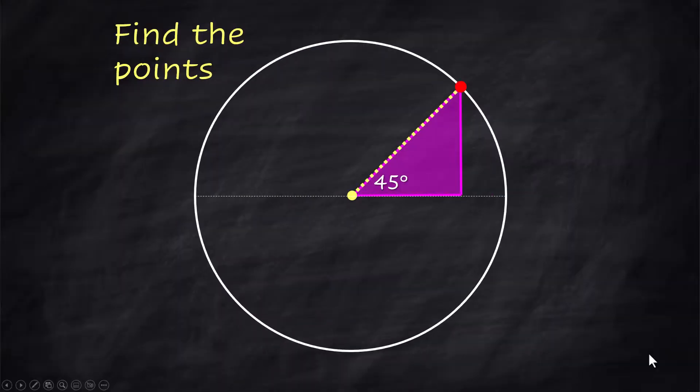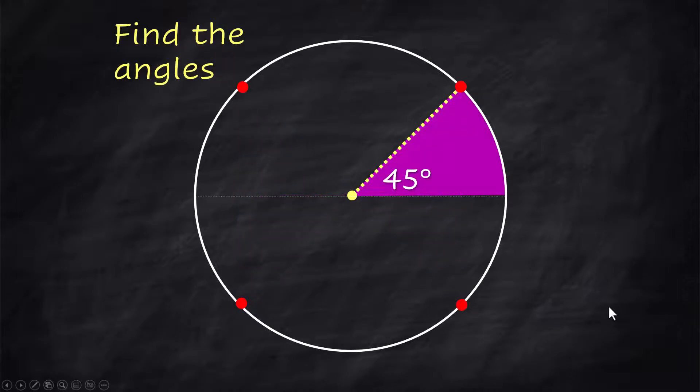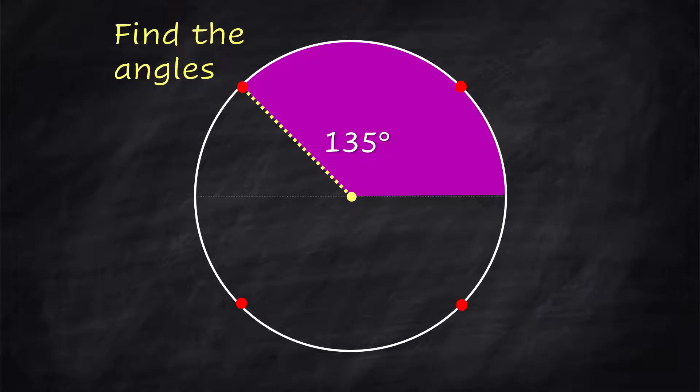Using the 45-degree triangle, let's find the other points. There will be one in quadrant 2, one in quadrant 3, and one in quadrant 4. So we know that the first one is 45 degrees. The second one will be 135 degrees, starting from 0 and swinging all the way over to that. Think 180 minus 45 degrees.